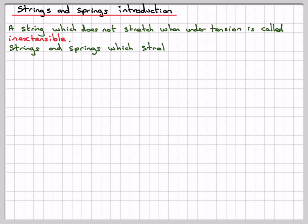Strings and springs which stretch are said to be elastic. There's two key words there: inextensible and elastic. Open coiled springs can also be compressed.